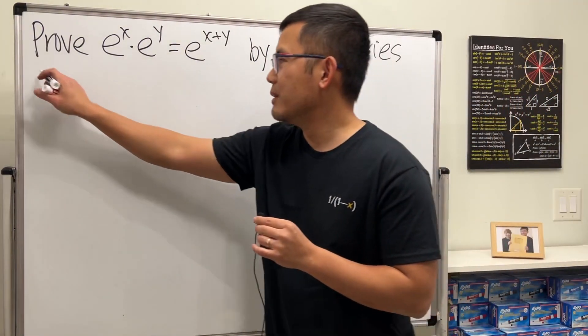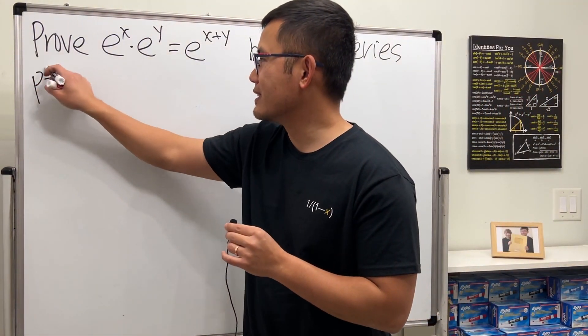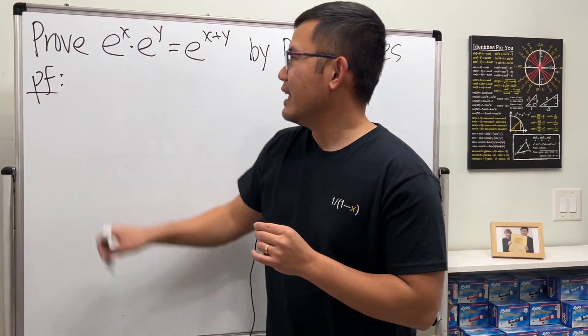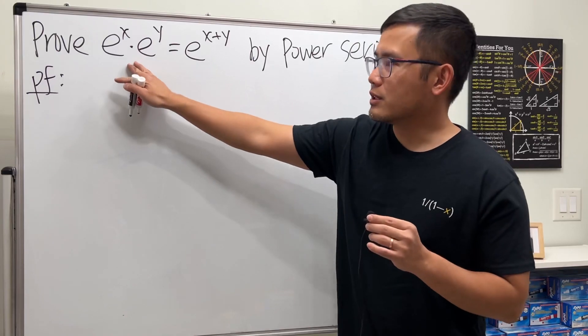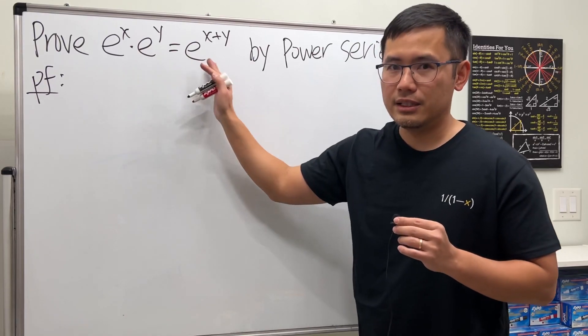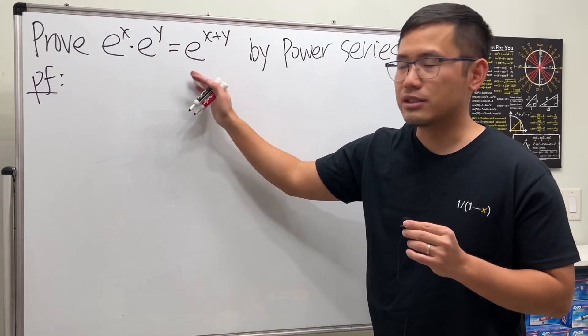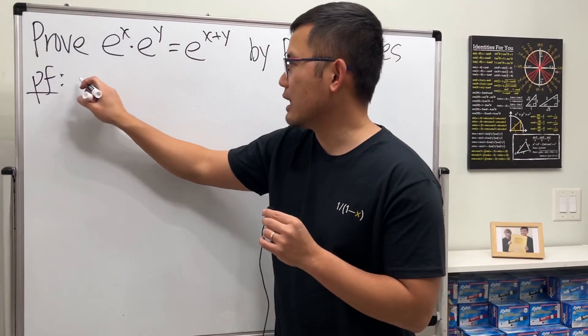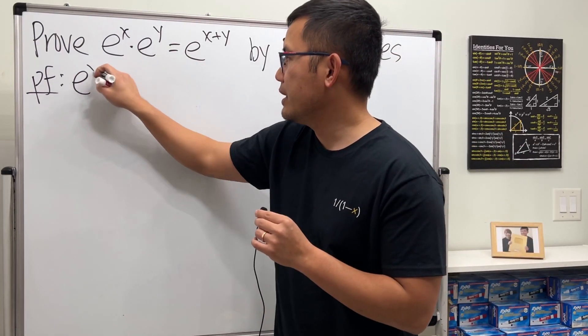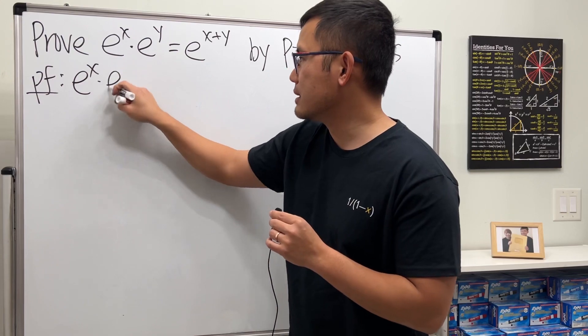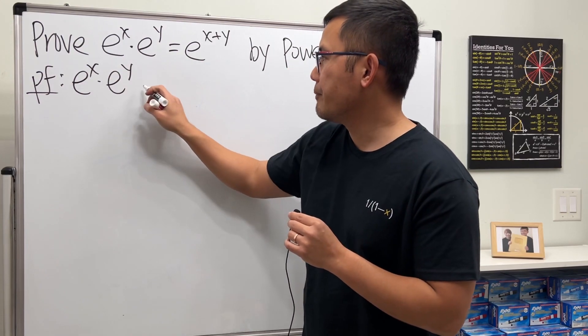All right, first, proof. We are going to start from the left-hand side and show the right-hand side. So let's go ahead and write down the left-hand side: e to the x times e to the y.